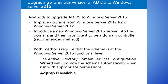To upgrade a previous version of AD DS to Windows Server AD DS, you can use either of the following two methods: upgrade the operating system on the existing domain controllers to Windows Server, or introduce Windows Server servers as domain controllers in the existing domain. You can then decommission AD DS domain controllers that are running earlier versions.